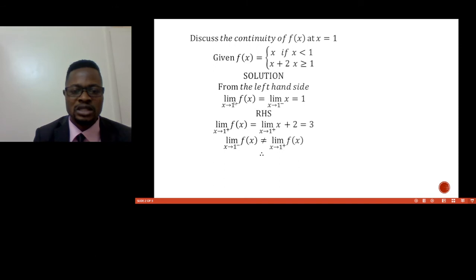From the left-hand side, we have 1, and we're going to work it based on the negative side, based on the left-hand side. That is why we have this negative sign here. So the limit as x approaches 1 from the negative equals x, which means that x is just 1.